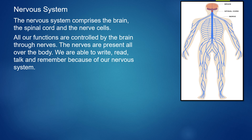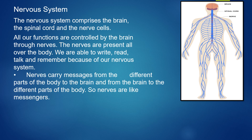All our functions are controlled by the brain through nerves. The nerves are present all over the body. We are able to write, read, talk, and remember because of our nervous system. The brain sends messages to our fingers to write, to our eyes to read, and to our memory to remember — all through the nerves.